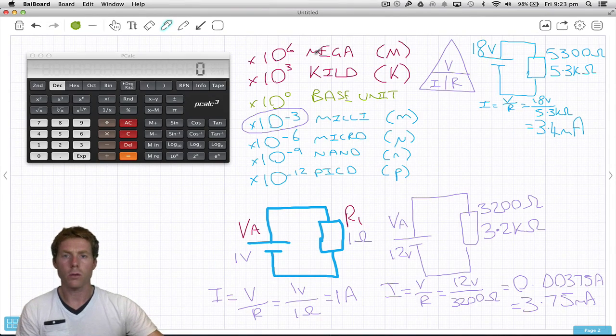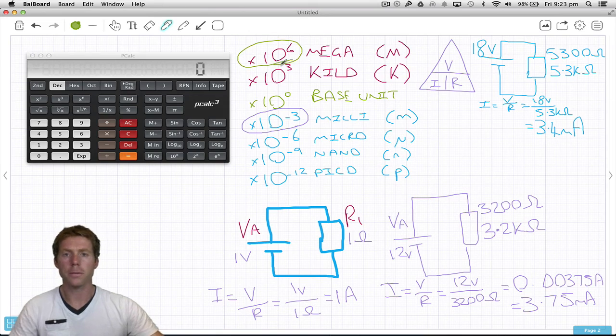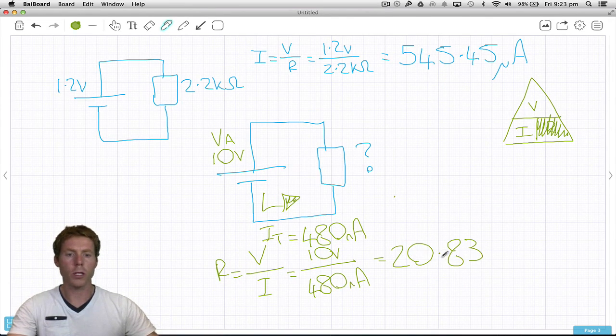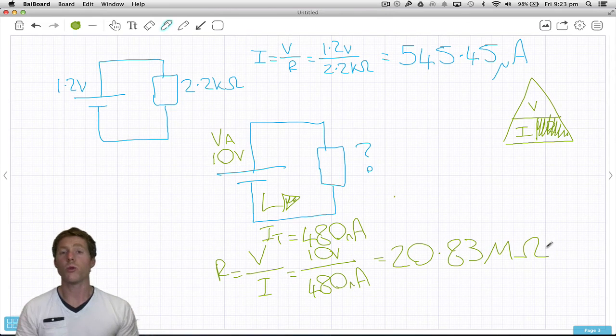Positive 6 is mega. So that value of resistance must be 20.83 mega ohms, or 20.83 million ohms.